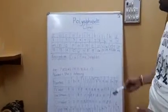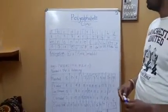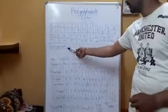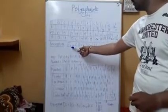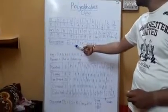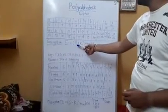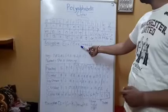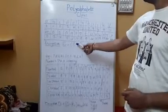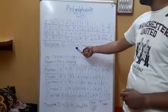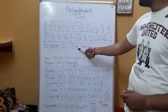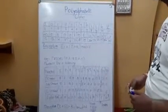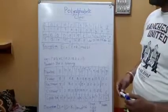For polyalphabetic cipher, we have written the encryption formula: EI equals (PI plus KI) mod 26, where P stands for plain text and K stands for key.